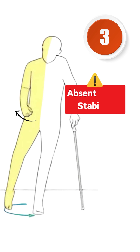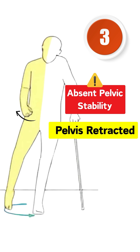The third reason is the retracted pelvis. Pelvis stability is lost due to gluteus medius weakness, and during walking, the pelvis forward rotation does not happen.